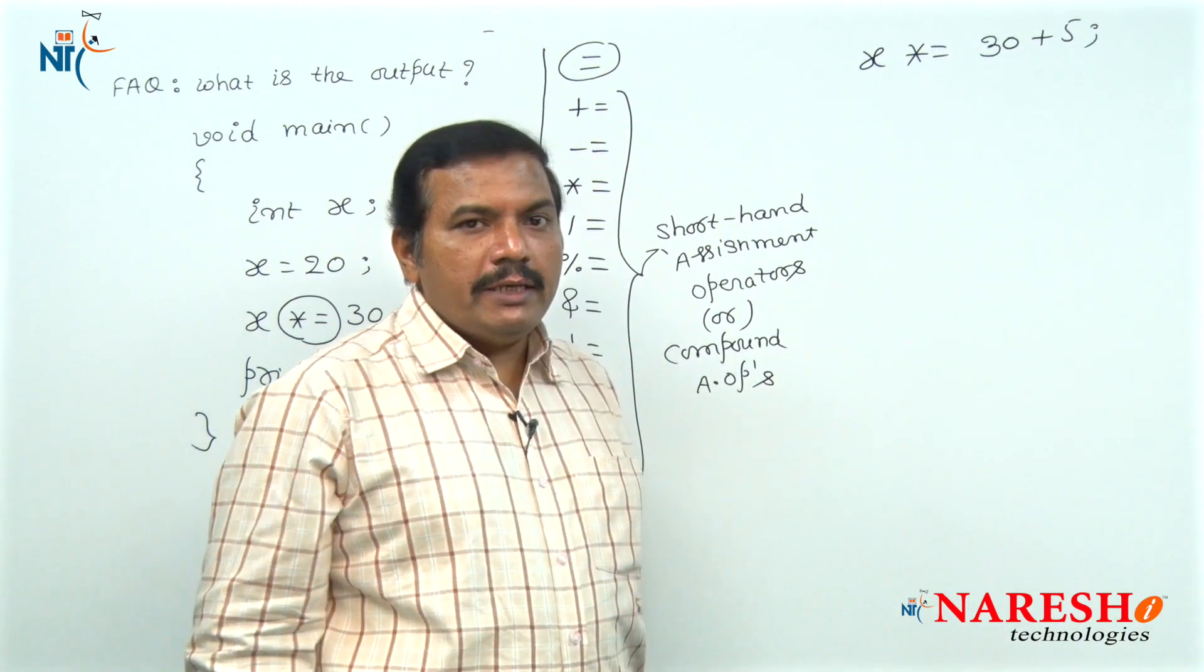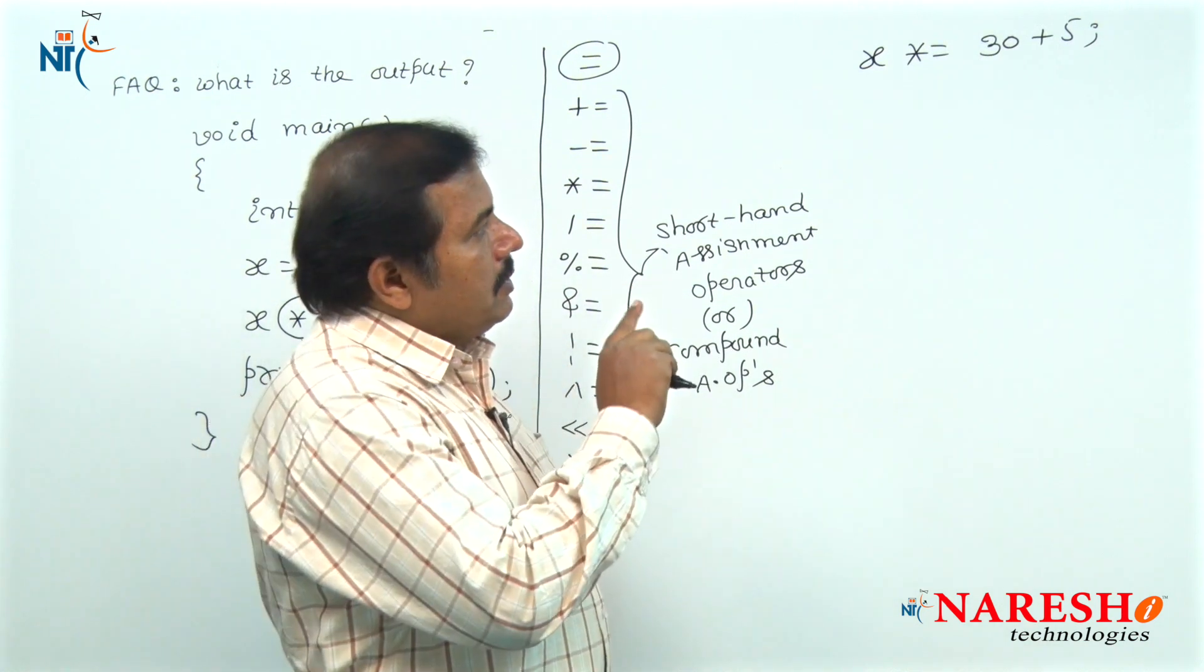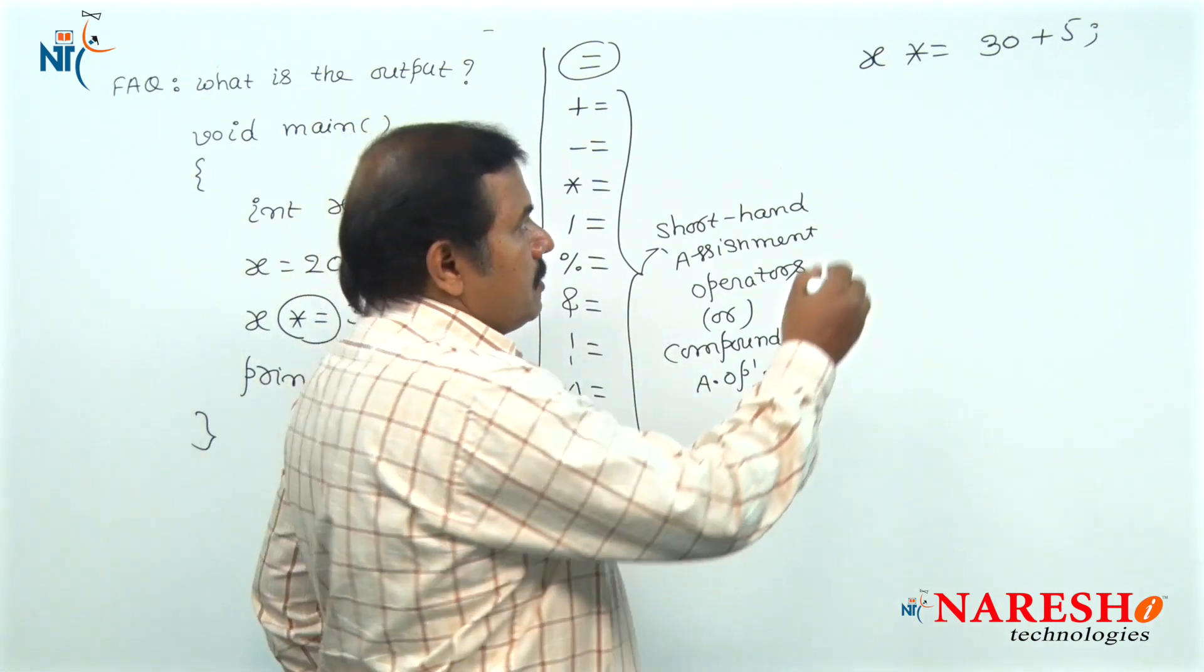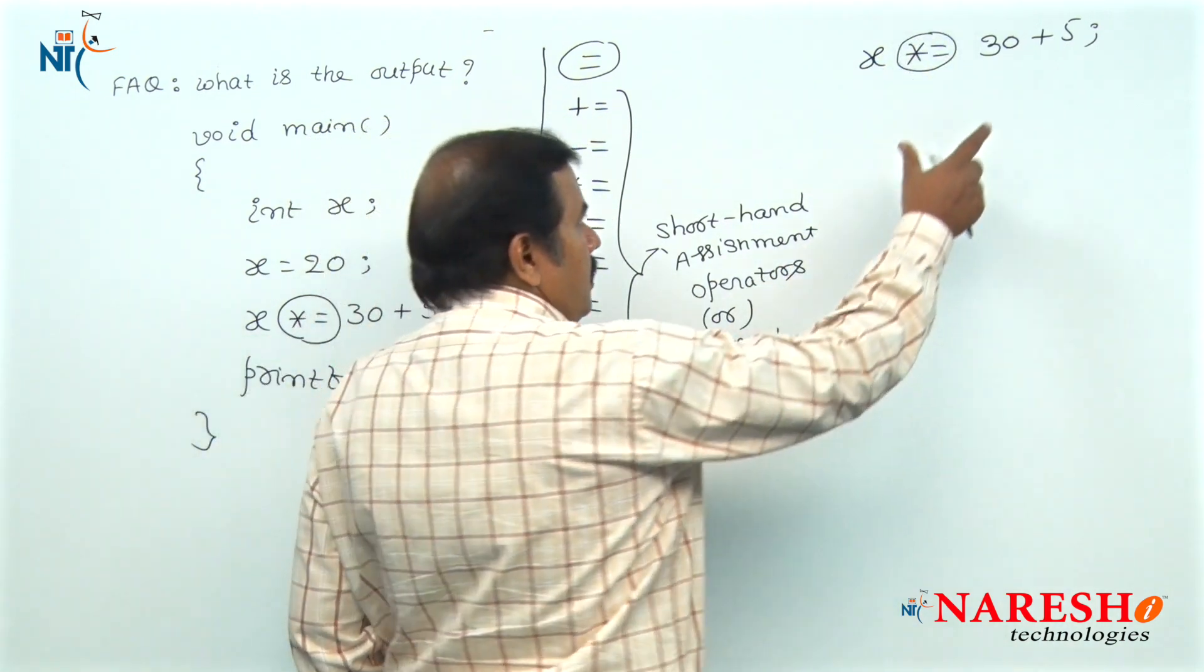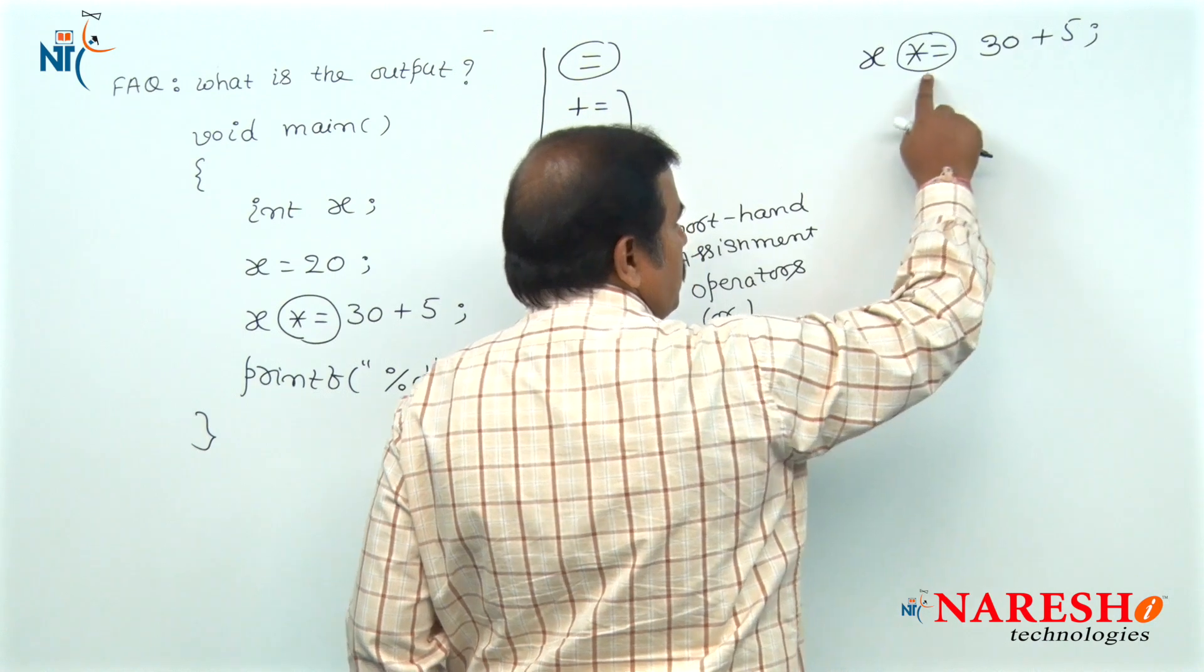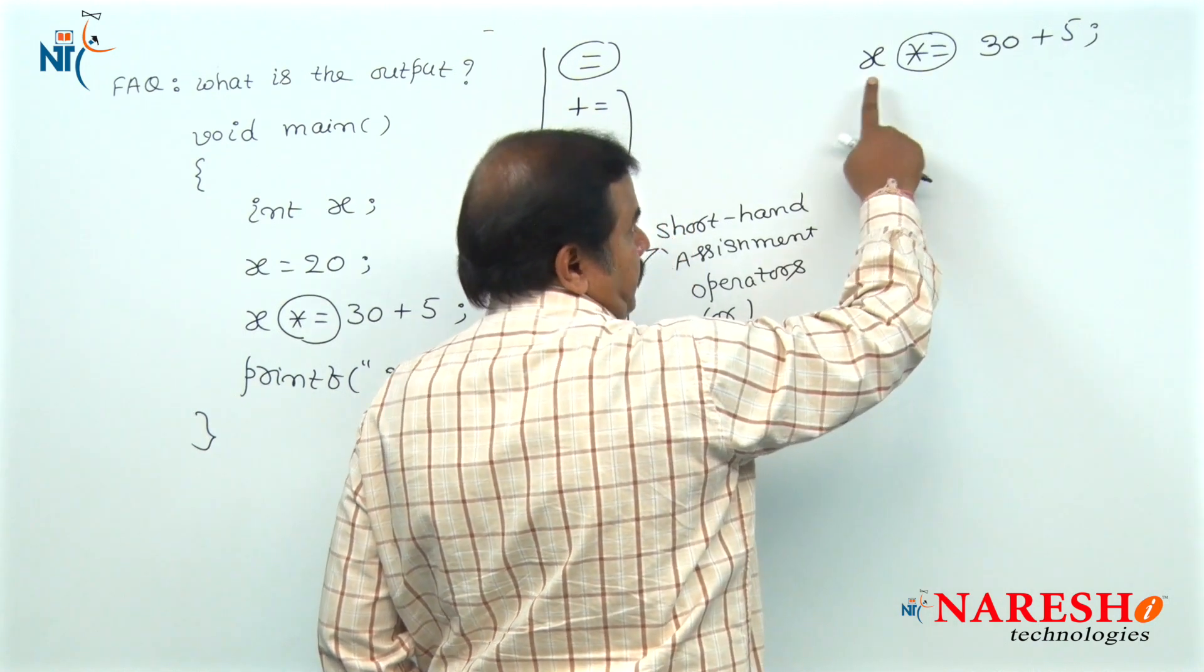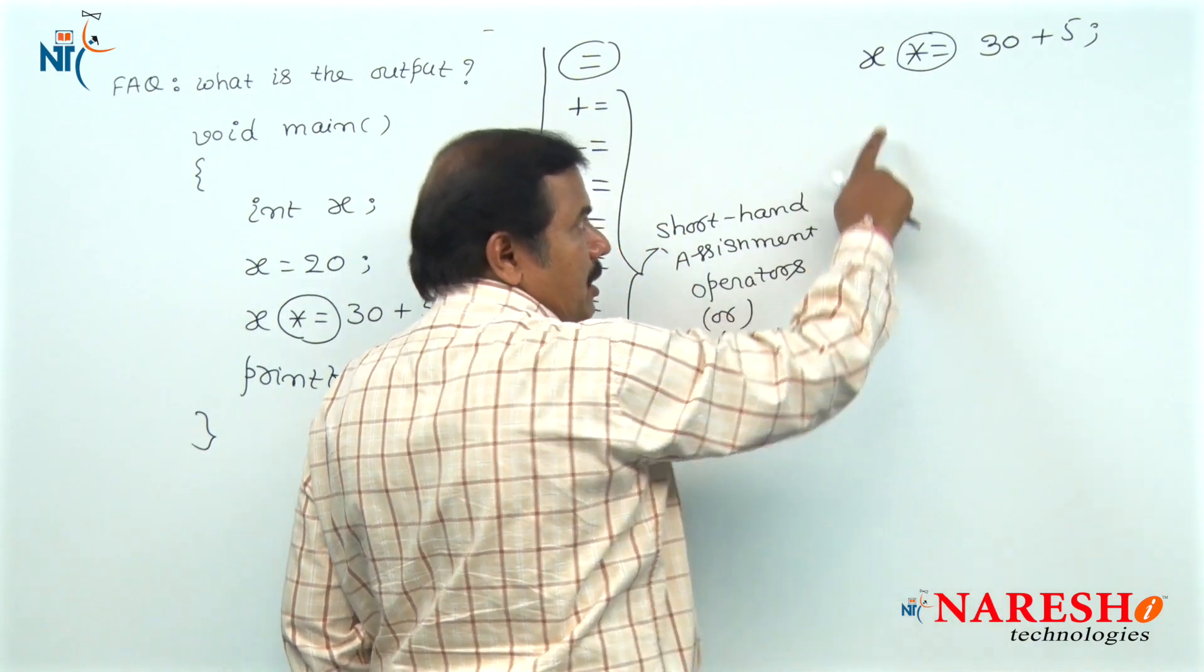In an assignment statement, the right side expression to this assignment operator is evaluated first. This is the right side operand and it is the left side operand.